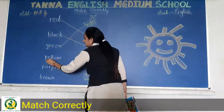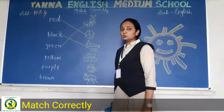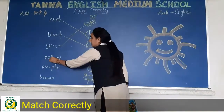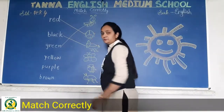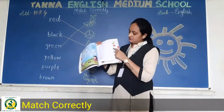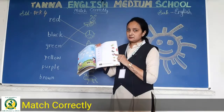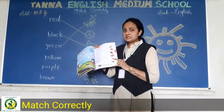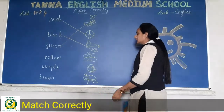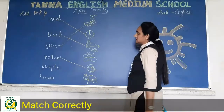Now see — Y-E-double L-O-W, yellow. Kunsa color hua ye? Yellow. What is yellow over here? Yeh butterfly yellow color ka hai? No — yeh bee yellow color ka hai. Woh yellow color ka hai. Toh aapko yellow color ko bee ke saath match karna hai.